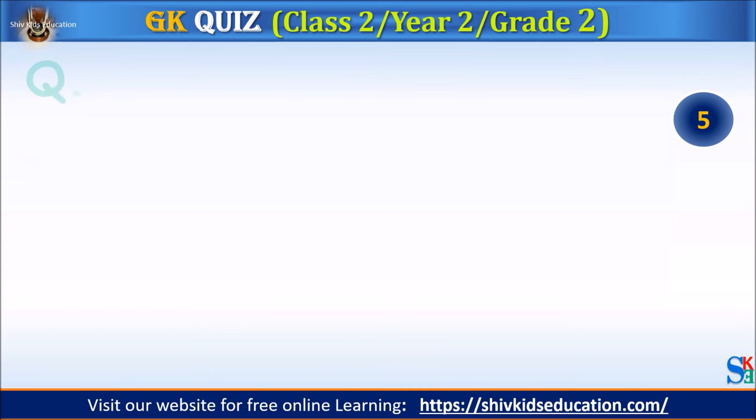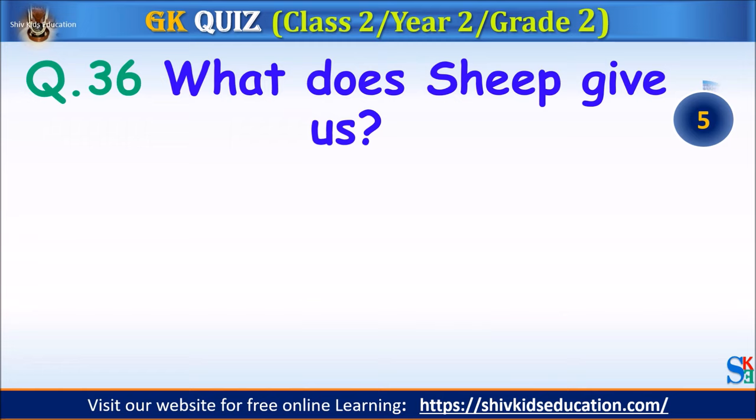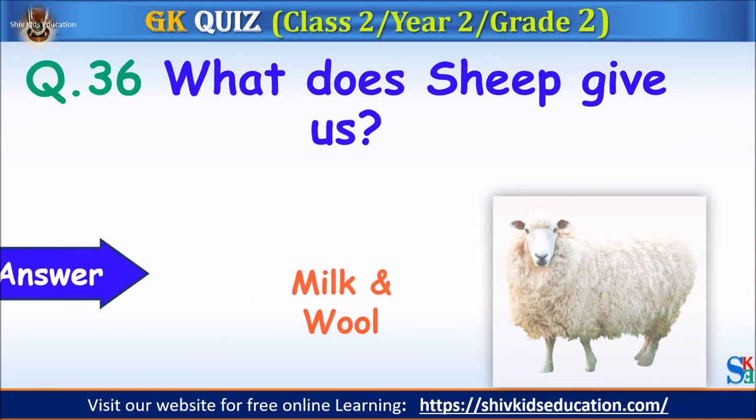Question 36: What does a sheep give us? Your time starts. The answer is milk and wool.